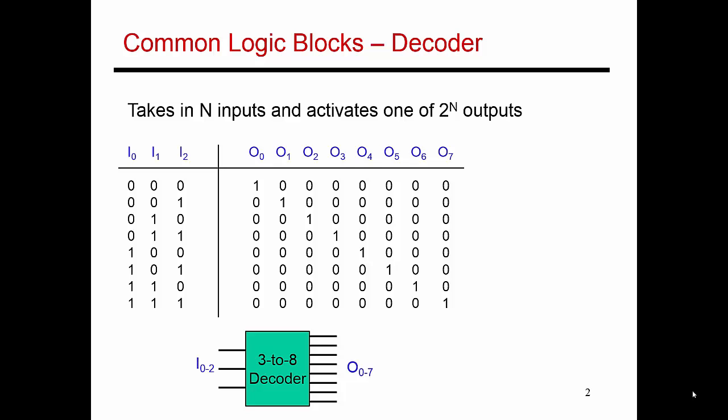The corresponding truth table is shown here, where I have three inputs. These three inputs essentially denote a number between 0 and 7, and accordingly one of the outputs, either O0, O1, O2, all the way up to O7, is then correspondingly made high. You'll see that given a set of inputs, exactly one of the outputs is made high.